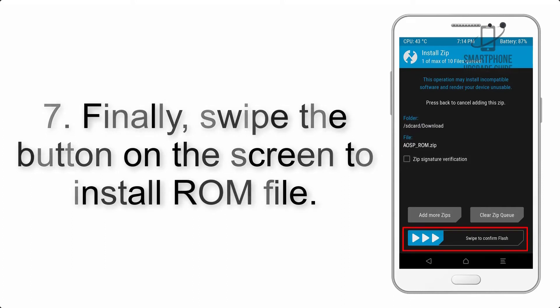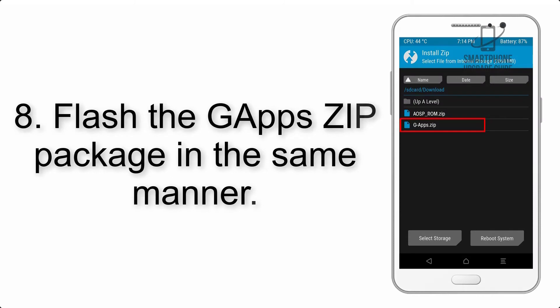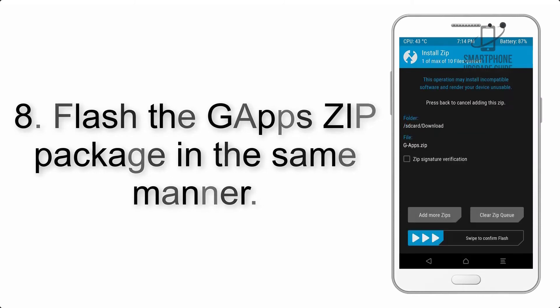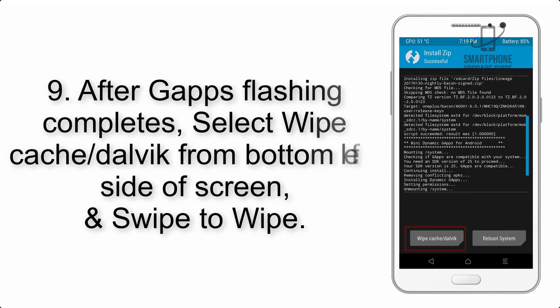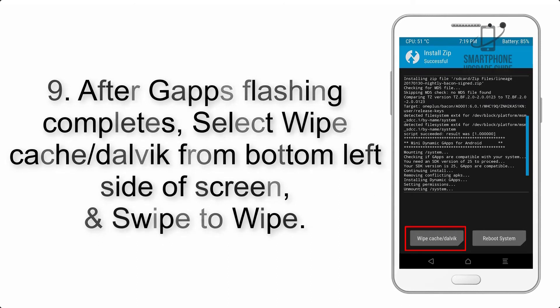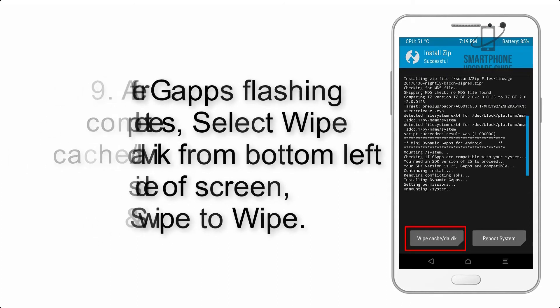Step 6: Navigate to the storage and select the ROM zip file. Step 7: Swipe the button on the screen to install the ROM file. Step 8: Flash the GApps zip package in the same manner.